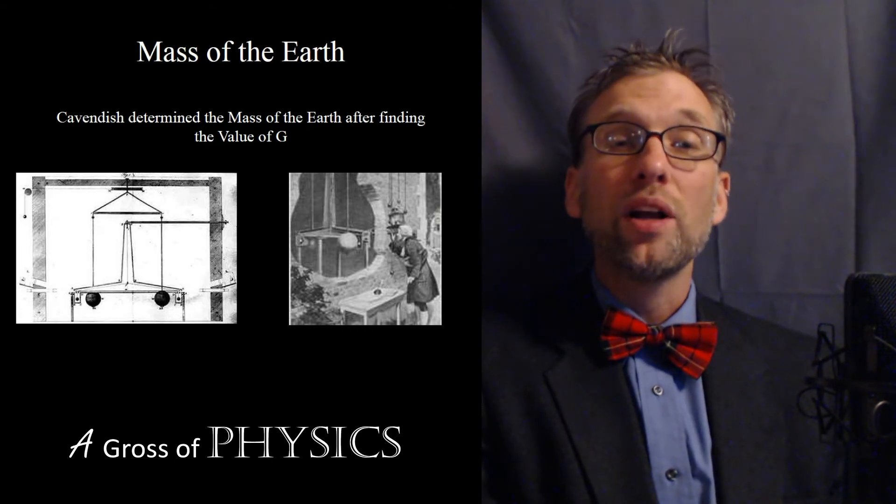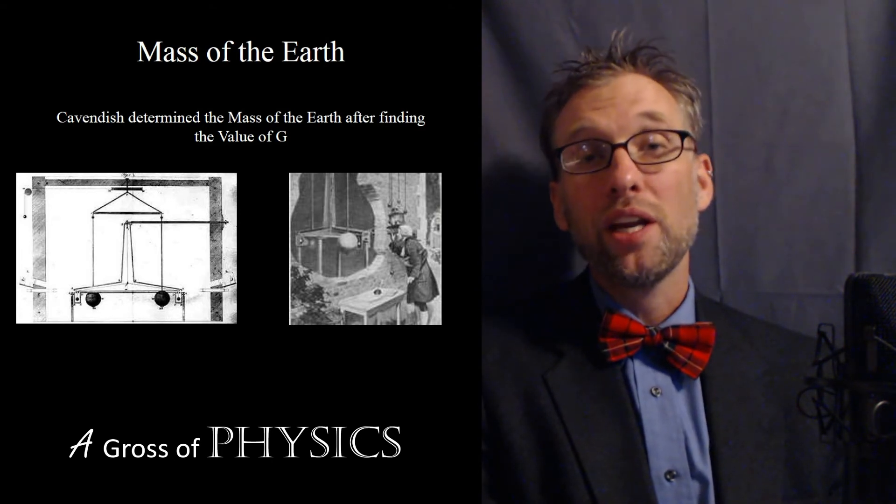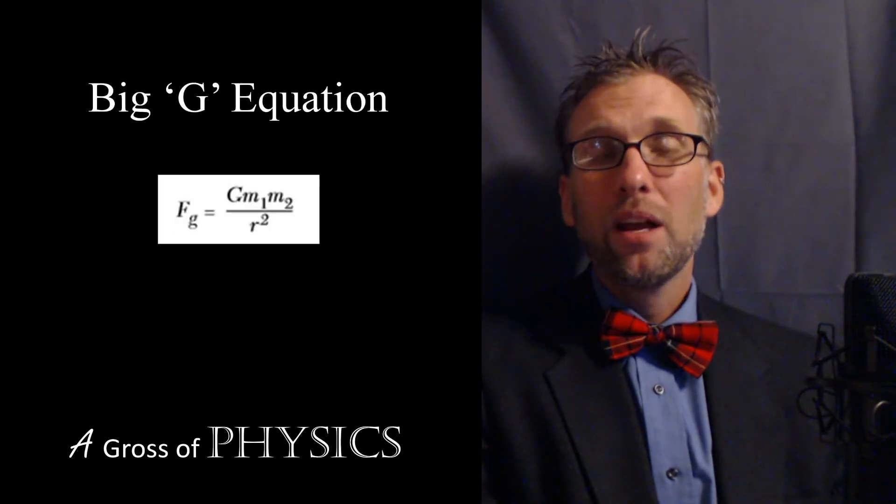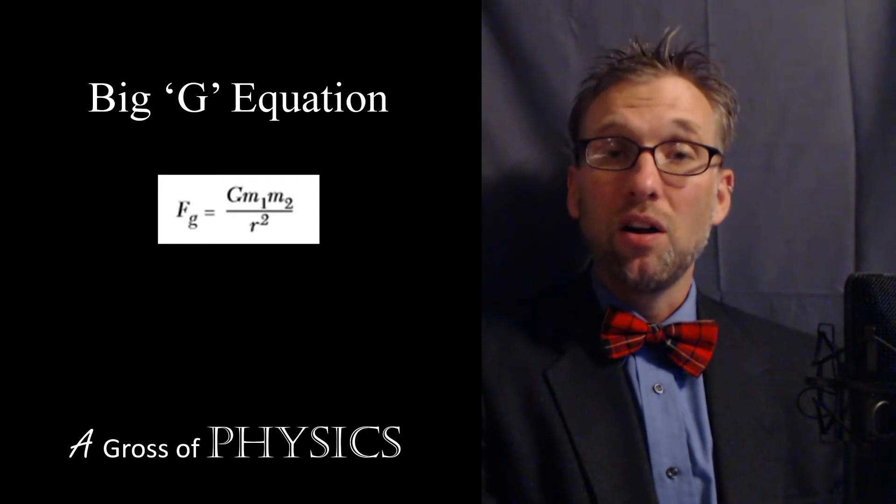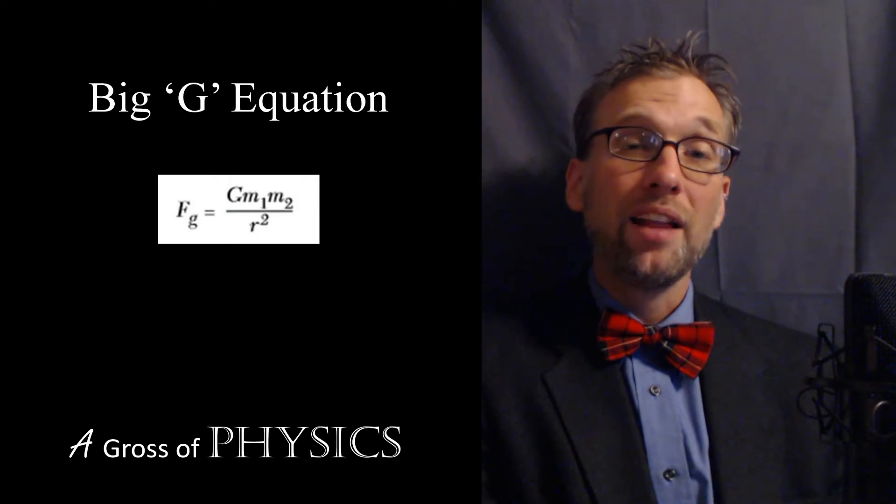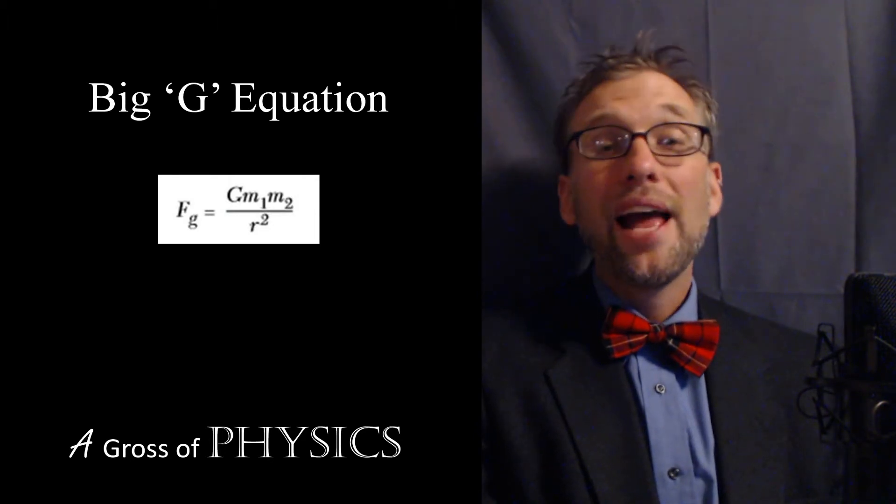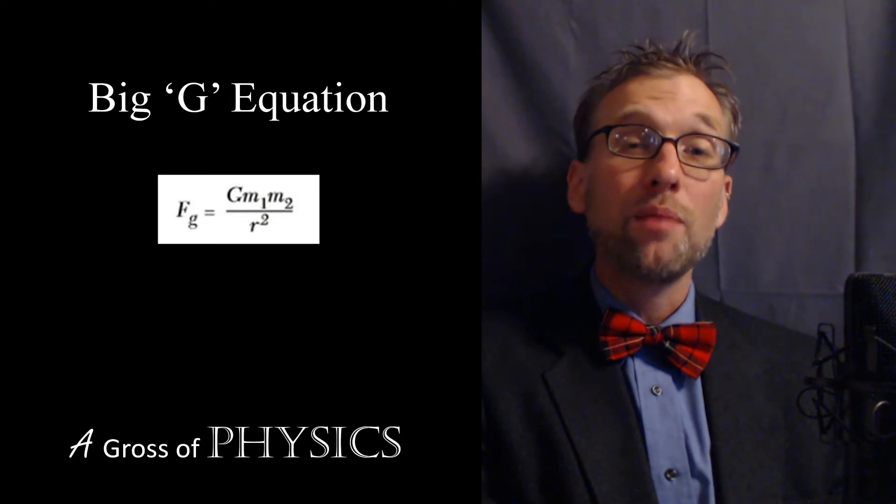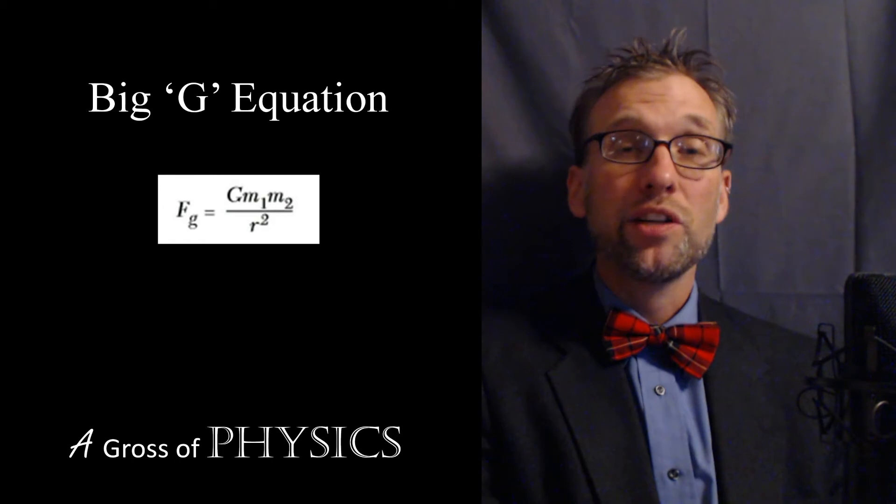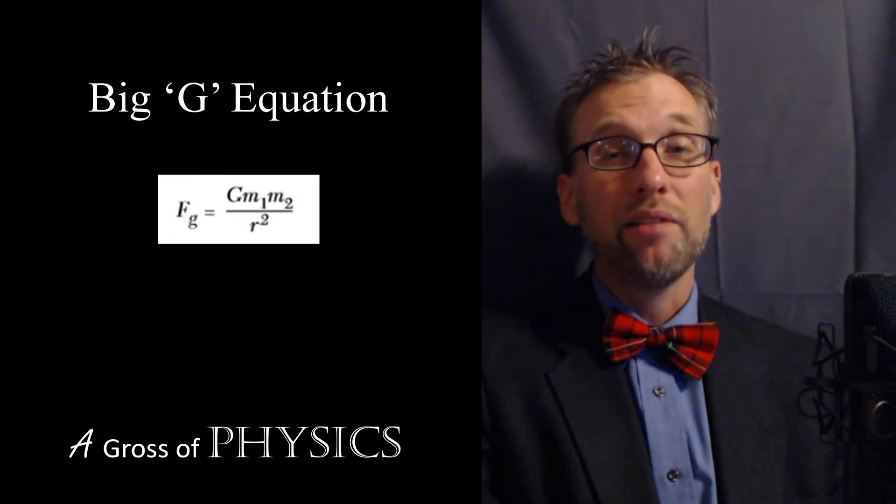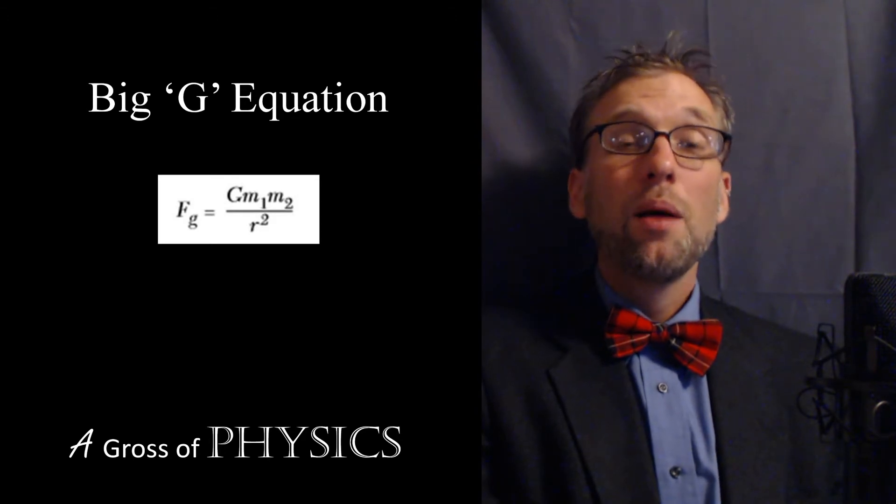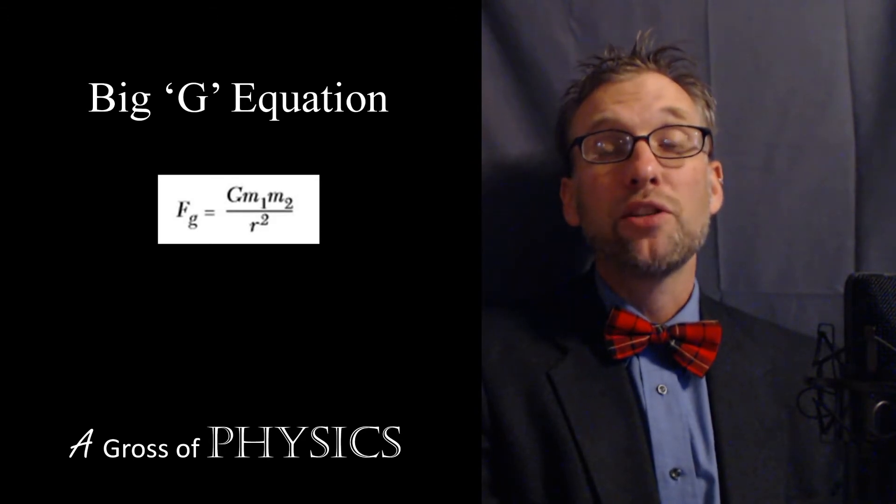What Newton was able to do was find the relative value of forces between sets of objects, always having this unknown constant in the way. But then Henry Cavendish came along and he was able to find the value for G and turn that proportionality into an equal sign. Now if we want to find the value between any two objects in the universe we can multiply the value of big G, which is 6.67 times 10 to the negative 11, times the two masses involved and then divide that product by the distance between the objects squared.